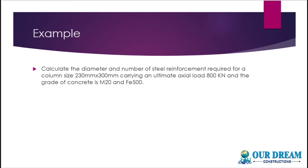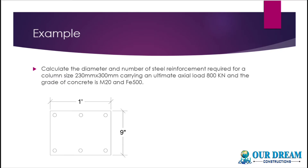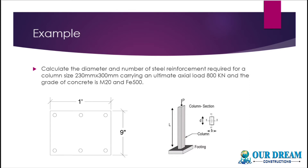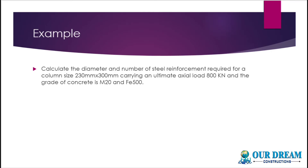Let's look at the first example. Calculate the diameter and number of reinforcement required for a column size 230 mm × 300 mm, carrying an ultimate axial load of 800 kN, with grade of concrete M20 and steel Fe500. A column of 230 mm × 300 mm carries 800 kN. In that column we use M20 concrete and Fe500 steel. Then we find the number of bars.